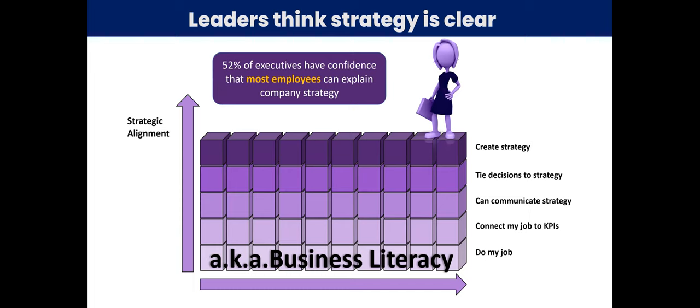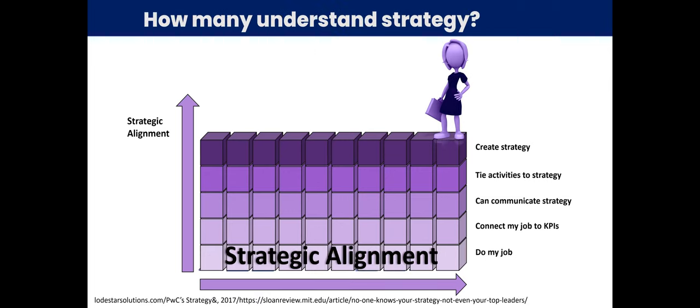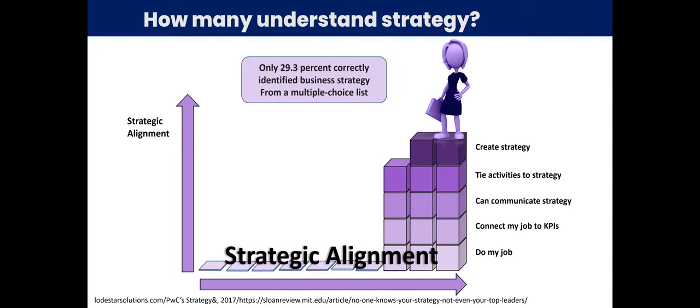Well, again, executives, of executives, 52% have confidence that most employees can explain their company's strategy. Although they hedge their bets a little, only 20% of executives have high confidence that most employees can explain their company's strategy. Well, how many employees really understand the strategy? It's a little bit alarming. Out of a survey using multiple choice tests, so they were given options, they weren't asked to bring it out of thin air, fewer than a third. Fewer than a third could identify what the business strategy was. That was kind of disappointing. And when they looked at managers as they got further and further away from the executives, only 13% of frontline managers could name the company's top three priorities.